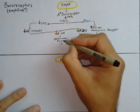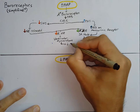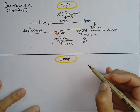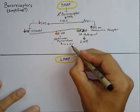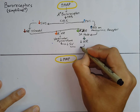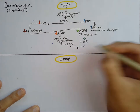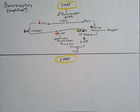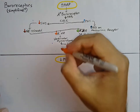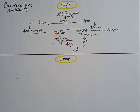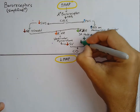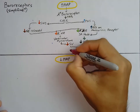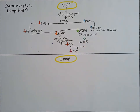As we inhibit the force of contraction, we are going to decrease stroke volume. And what do we know about cardiac output? Cardiac output equals heart rate times stroke volume. So stroke volume and heart rate come together to affect cardiac output. If we decrease stroke volume and we decrease heart rate, that cardiac output is going to decrease as well — which is perfect, it's exactly what we want.